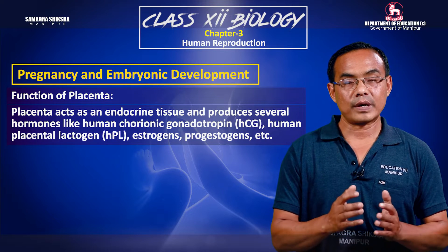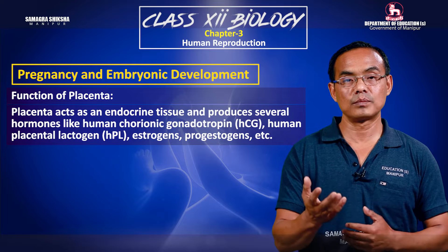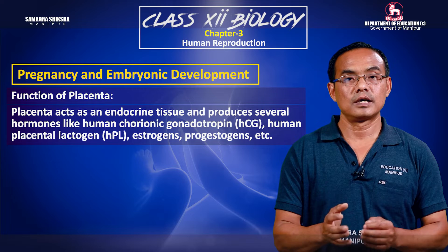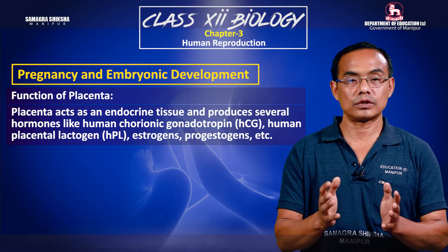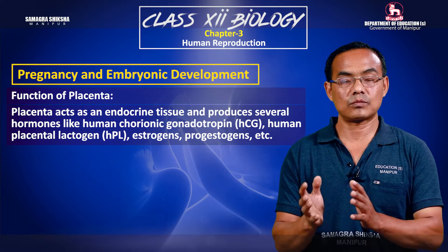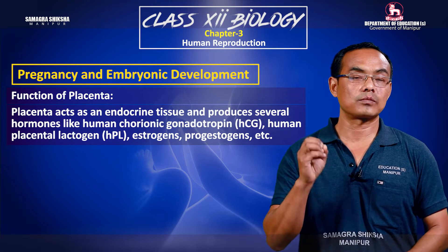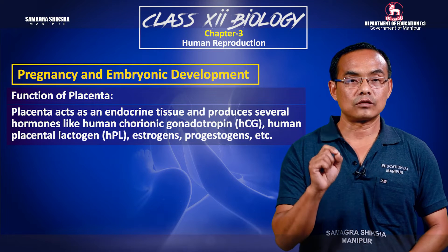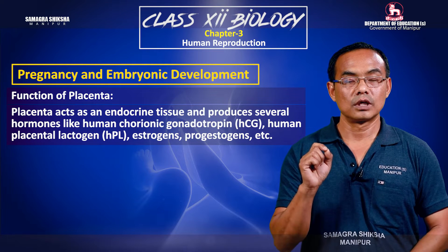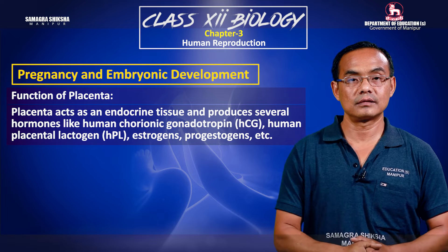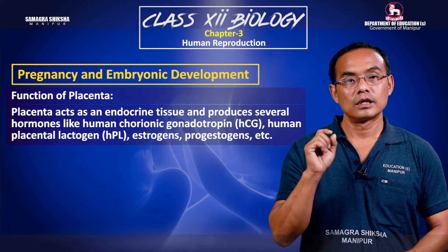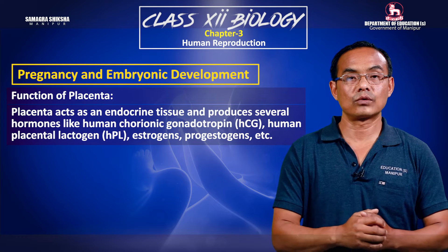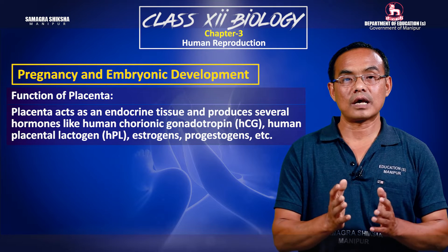During pregnancy, the stages are referred to as embryo and then fetus. The placenta also helps relax the ovary, corpus luteum, and related structures through relaxin.